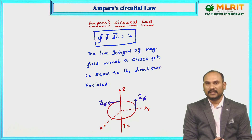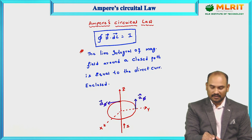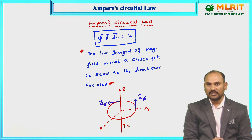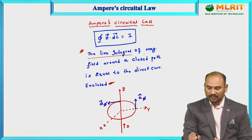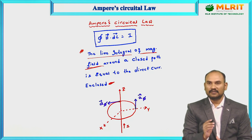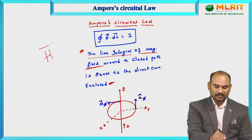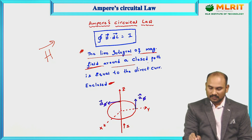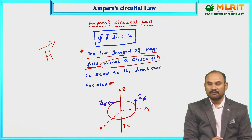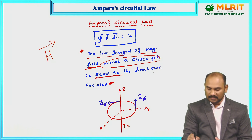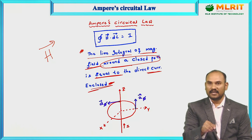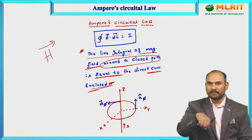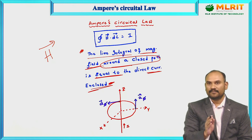What does Ampere's Circuital Law actually state? The line integral of the magnetic field H — when you integrate the magnetic field around a closed path — is equal to the current that is enclosed. Whatever current is enclosed by that closed path, integrating the magnetic field on that closed path gives you that enclosed current.